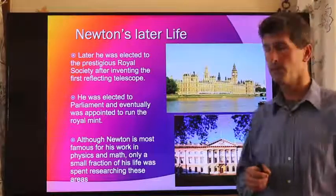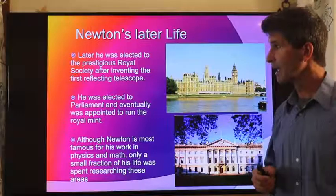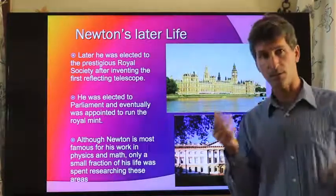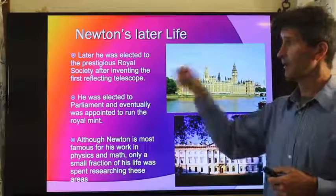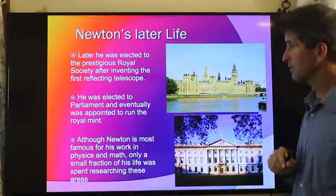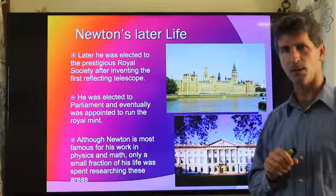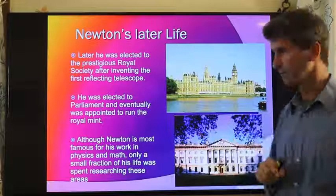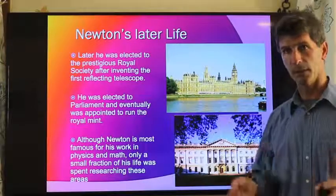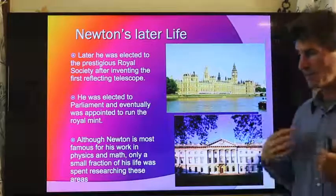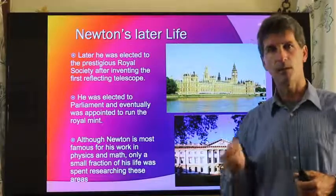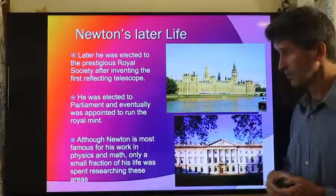Later in life, Newton, due to his fame, was elected to the prestigious Royal Society. The Royal Society would decide matters of math and science or natural philosophy in England. And he was appointed here, or elected here, after he invented the Reflecting Telescope, which is the basis for all research telescopes today. He was also elected to Parliament, but really didn't do very much in Parliament. He said that the only thing that he ever said was, somebody should close a window before we get a cold.